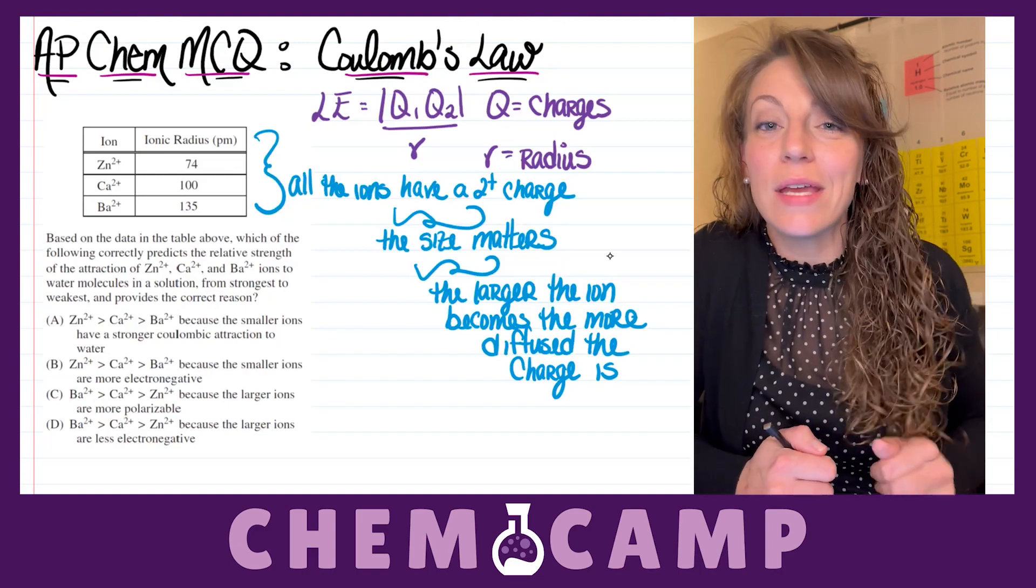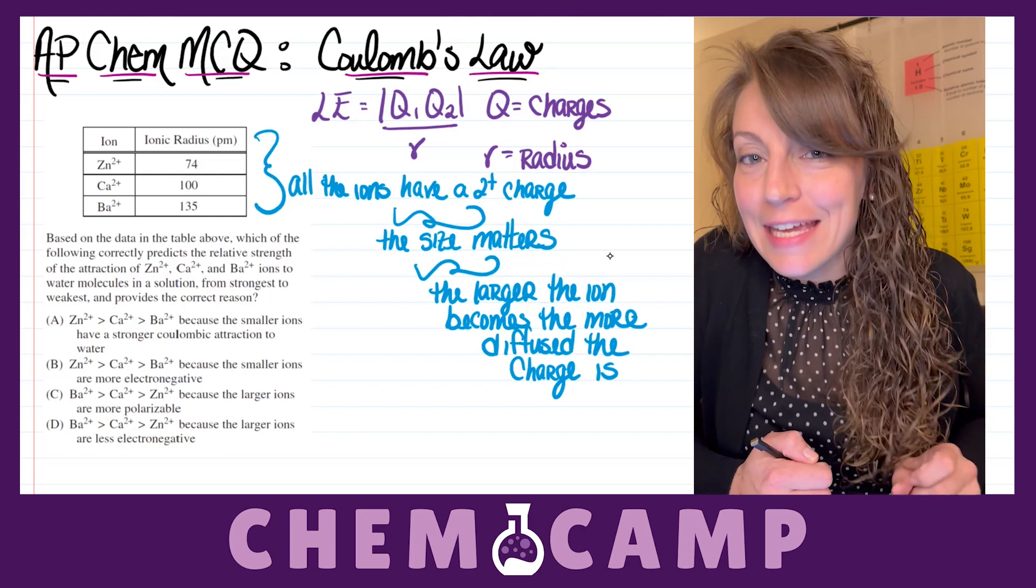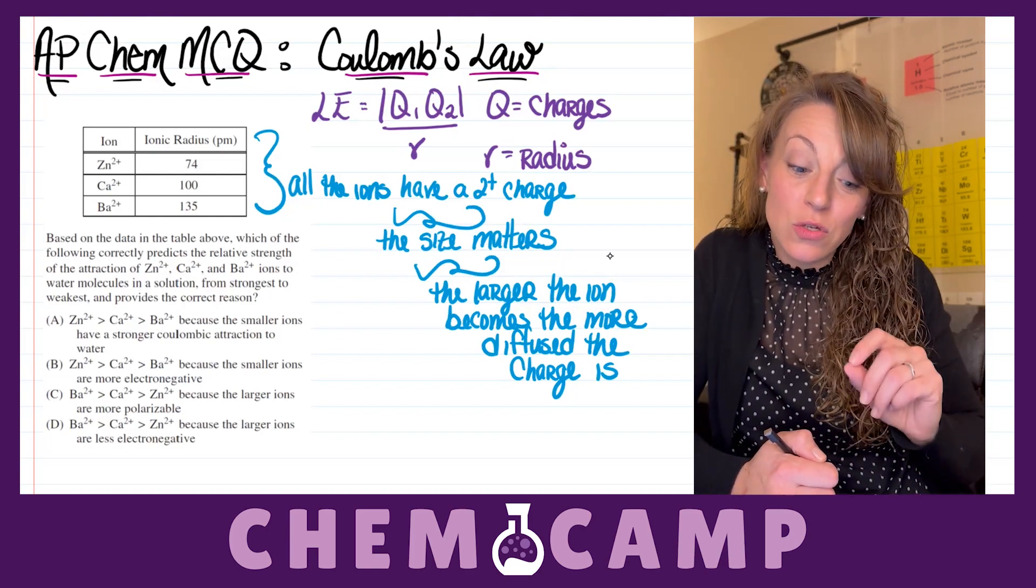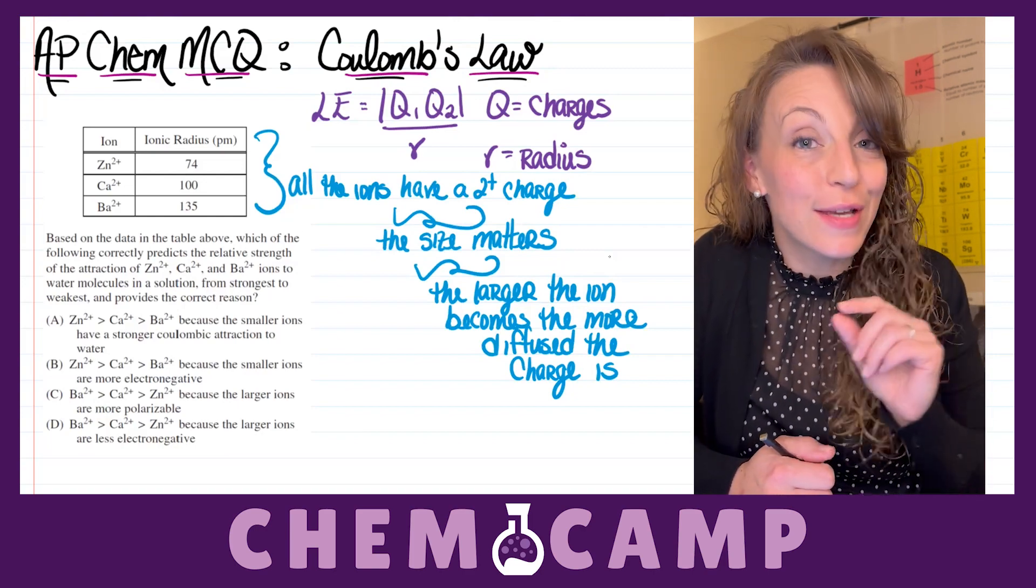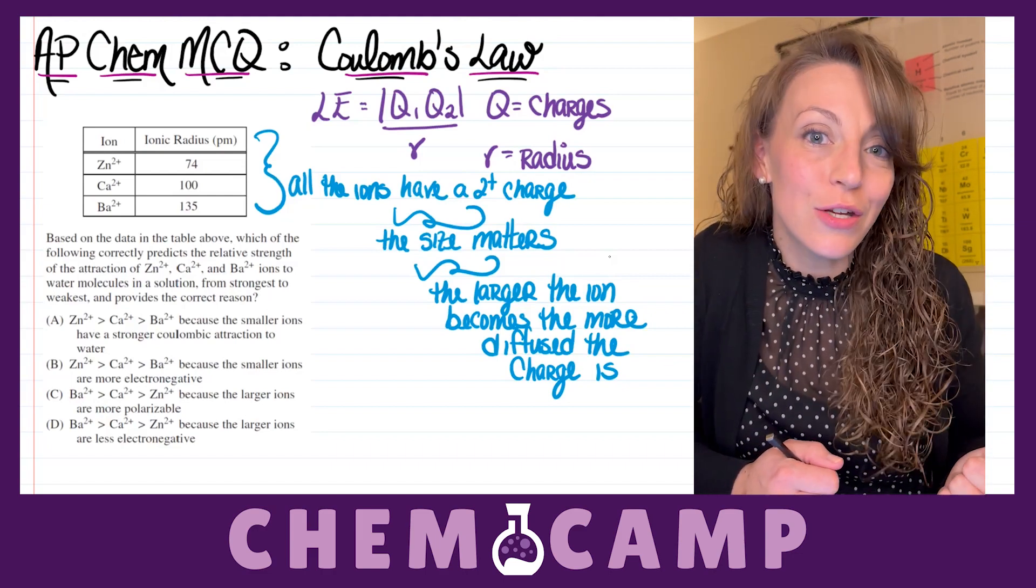The more diffused, then it's going to wind up having weaker attractions. So the correct ordering here is going to be the Zn²⁺ at the strongest because it's the smallest, and the Ba²⁺ at the weakest because it's the largest.